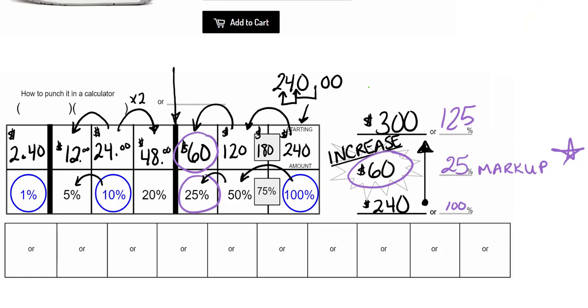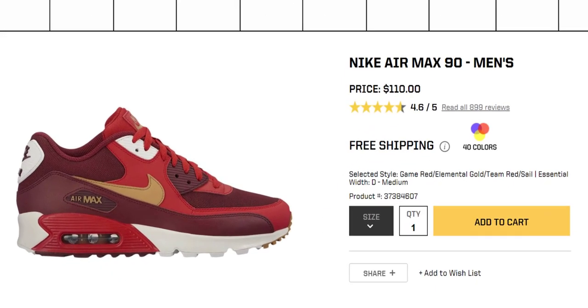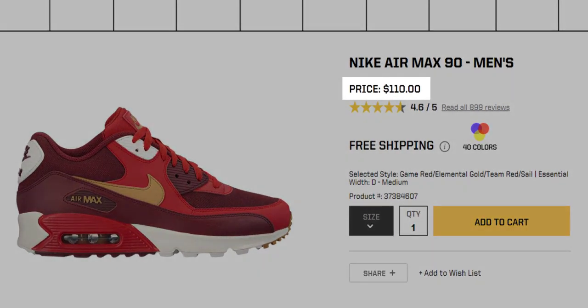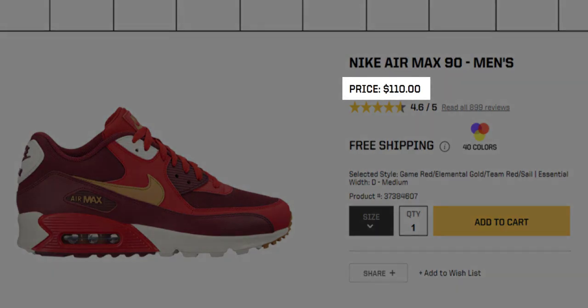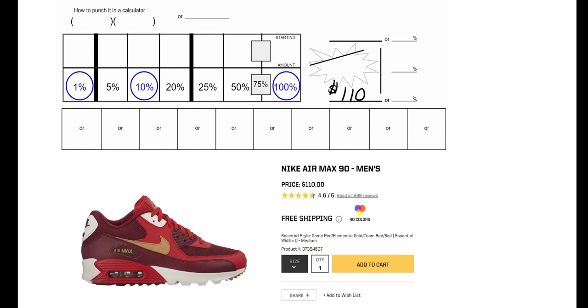Instead of starting with the dollar amount that we paid and knowing the dollar amount that we want to sell the shoes for, let's do this one a little differently. Let's take this pair of Air Maxes that we've got and the original price you guys can see right here is $110. That, again, is 100% of our price.